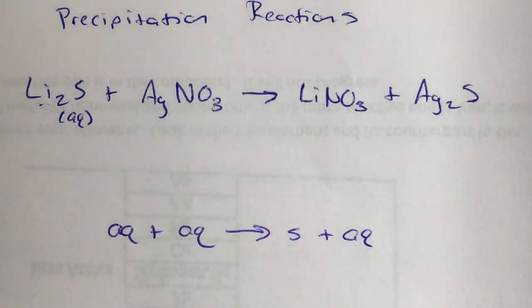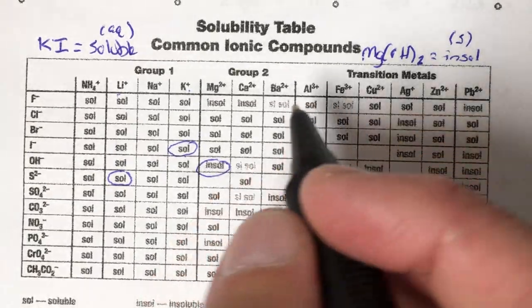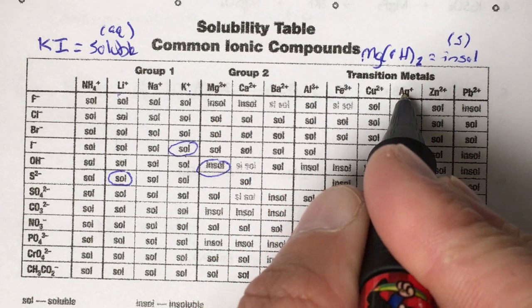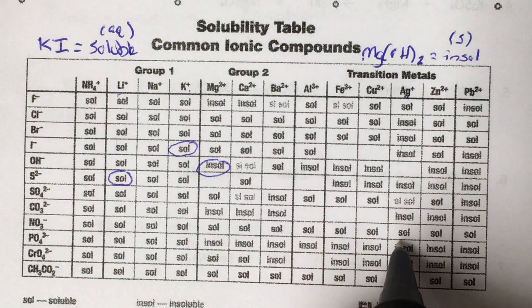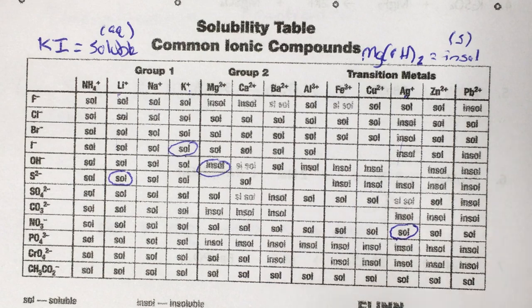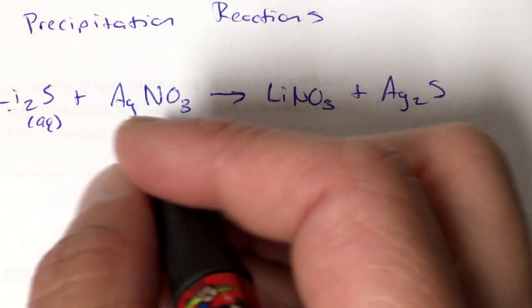Now we're going to go to the silver nitrate. So again, we come back to this. We find the silver. Silver's right there. We go all the way down to the nitrate row, which is right here. And it says soluble in the box. So we mark this one AQ.